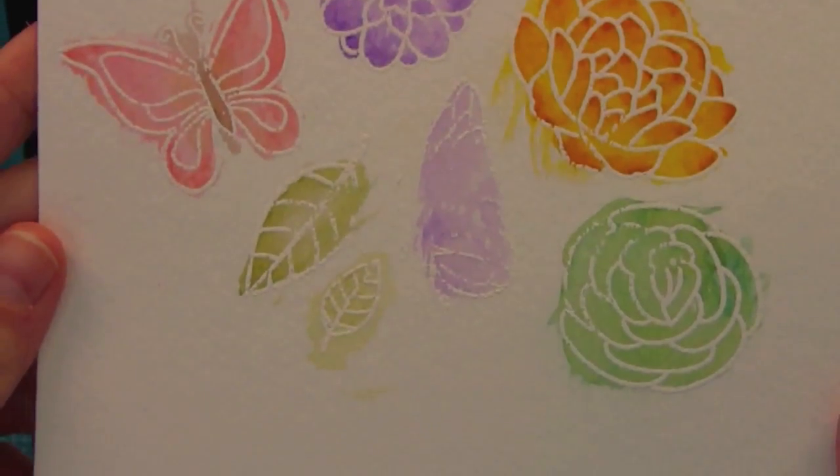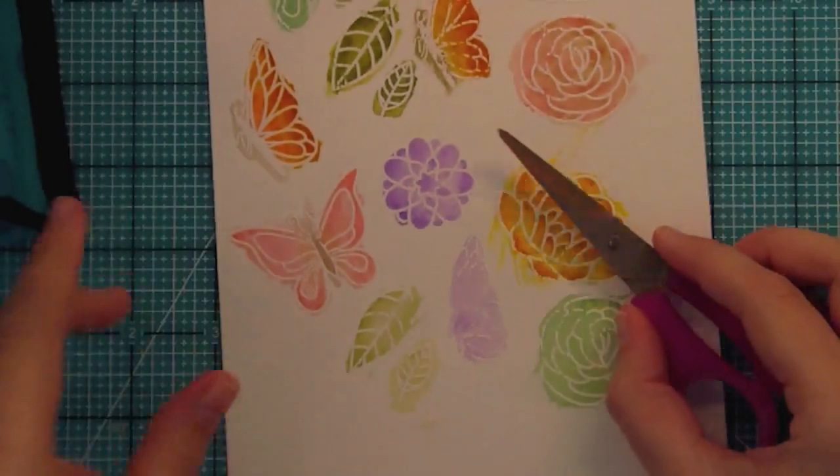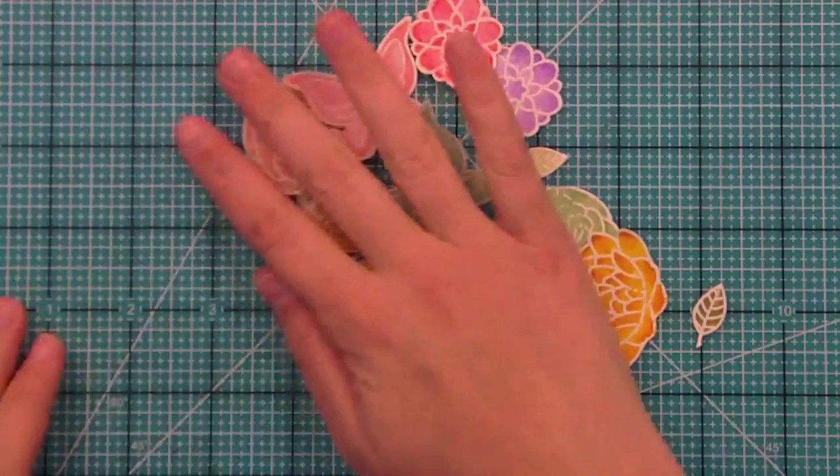You can see all the different variations I did by blending all the different markers together and more water or less water to get darker and lighter colors.